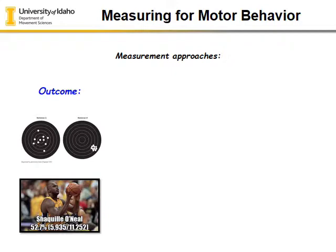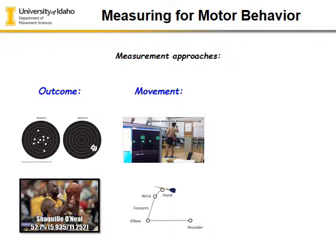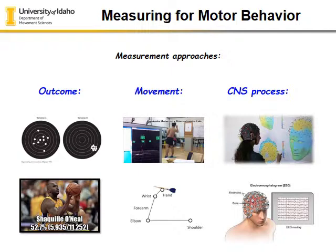There are a couple of measurement approaches: one is the outcome — made shots versus did I hit a bullseye — and that is the outcome of the measurement. Then there are things I do regularly in the biomechanics lab, where we assess movement and want to know what the joints are doing and the pattern of motion. Then you have CNS process measures — looking at brain activity and EMG activity in the periphery to see what's happening with the central nervous process.